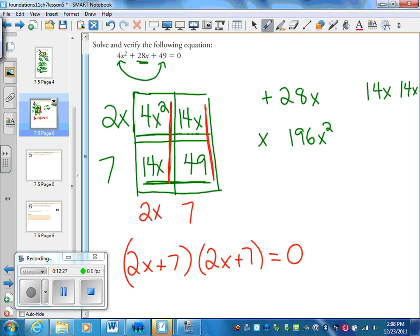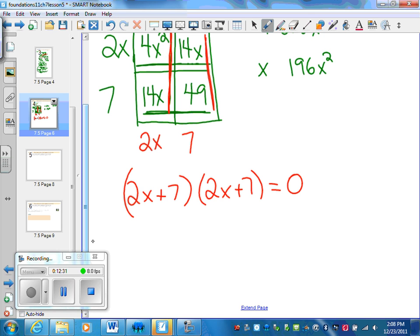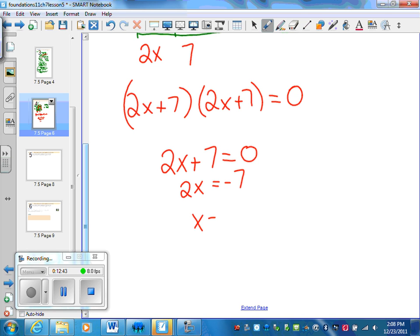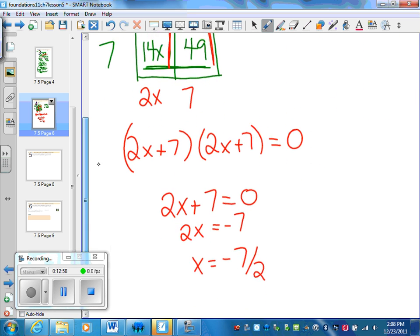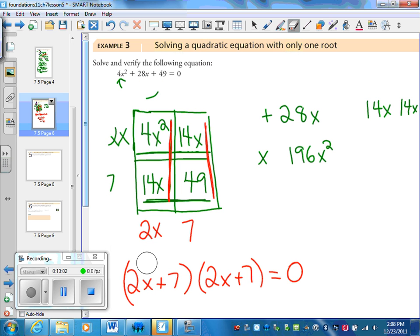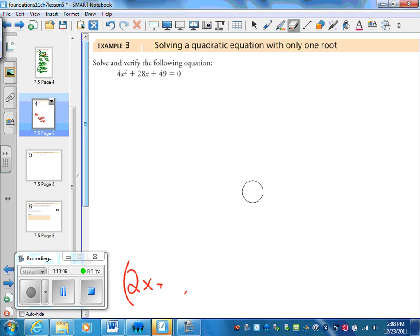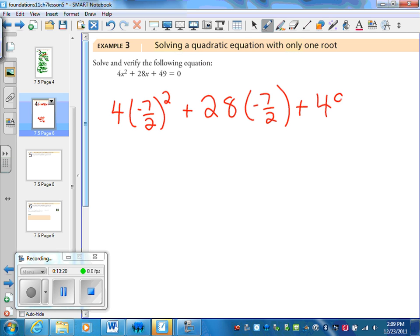So in this case, the factors are the same. So either this equals zero, either this equals zero. So we can only just do this once. 2x plus 7 equals zero, 2x equals negative 7, x equals negative 7/2, or negative 3.5. And now it says we need to verify this. So to verify, we can put it in our graphing calculator, or we can substitute it in. I like substitution. I'm going to substitute negative 7/2.